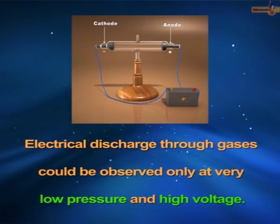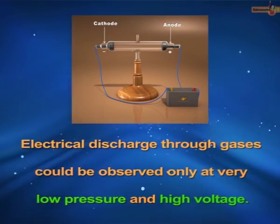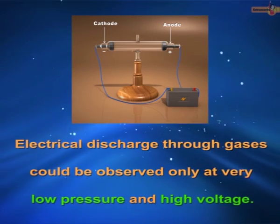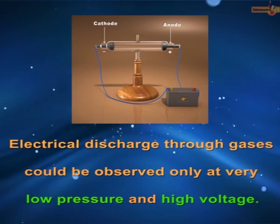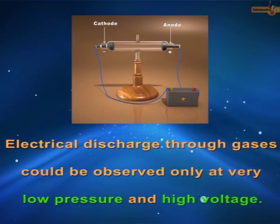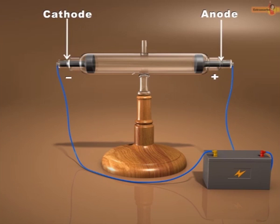The electrical discharge through the gases takes place only when the pressure inside the tube is very low and the potential difference between the electrodes is high. When a high voltage is applied between the electrodes, different results are observed at different pressures.